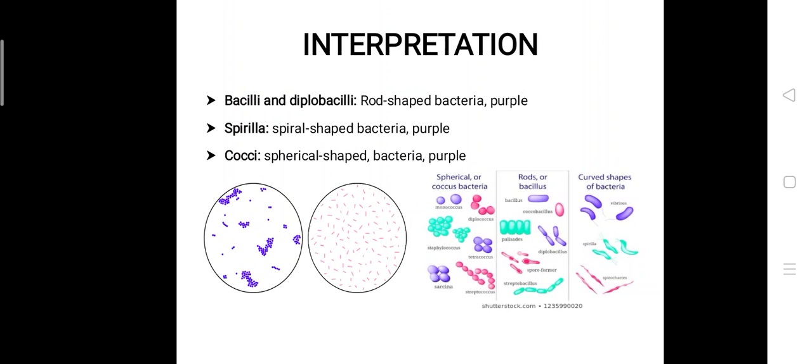In simple staining, you are comparing only the morphological shapes and arrangement of bacteria — how they look, their shapes, and their arrangements. As the name suggests, it is a very simple method and easy to carry out, using only one reagent — either crystal violet, carbol fuchsin, or methylene blue — and observing for morphological shapes and arrangements such as bacilli, diplobacilli, spirilla, or cocci.